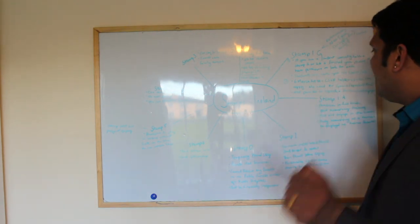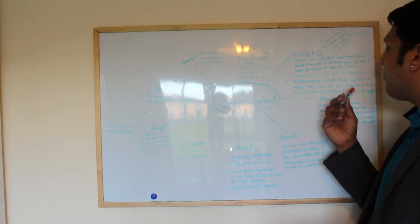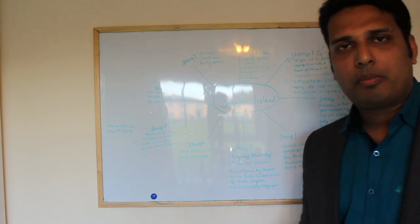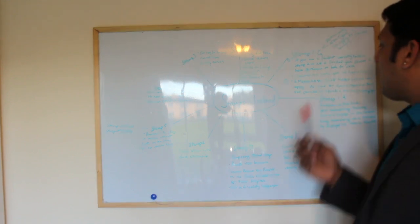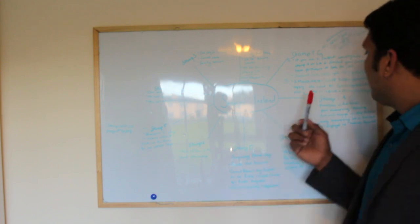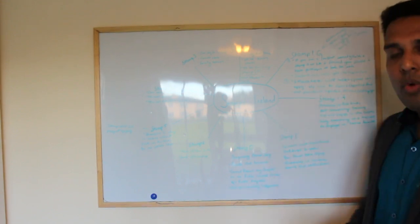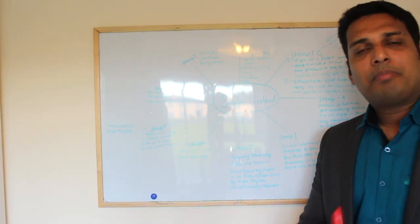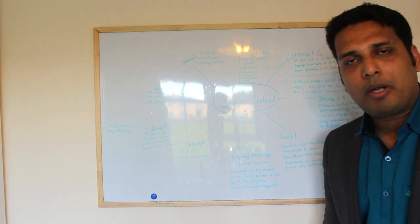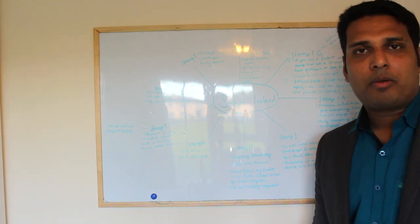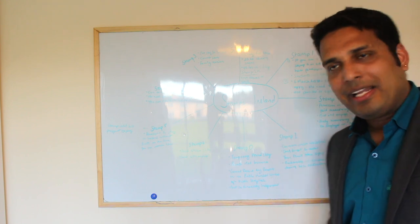The second thing: on 6th of March 2019 critical skills employment permit, critical skills work permit holders spouses can apply for stamp one G as well. No need for spousal dependent work permit anymore. Previously spouses of critical skills work permit had to apply for spousal dependent work permits. From 6th of March they have taken that away.